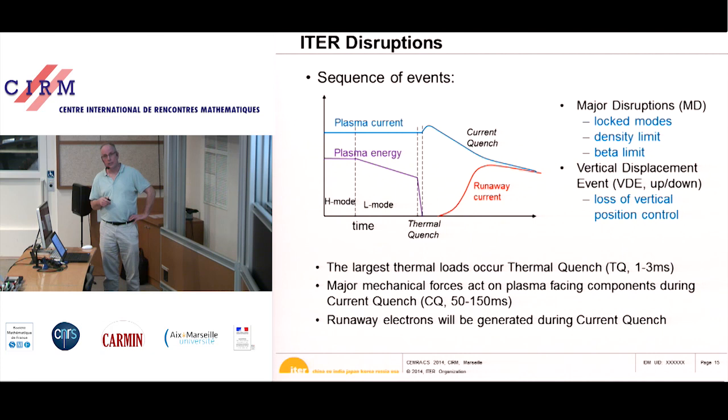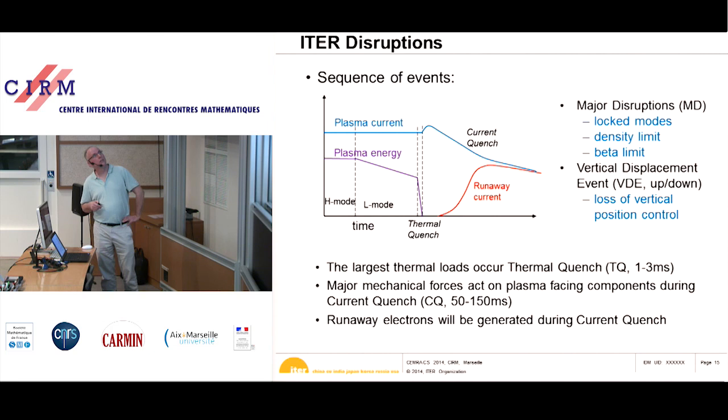The whole plasma energy is lost — meaning the kinetic energy part. The temperature goes from 30 keV in the center down to about 100 eV very quickly. But the plasma current cannot decay so quickly because it's an electrical circuit — the current decay will go much slower, on a timescale of 50 to 150 milliseconds.